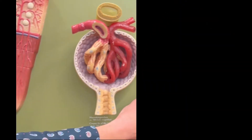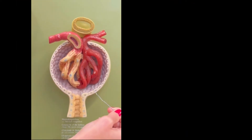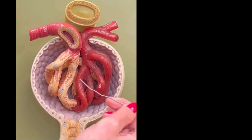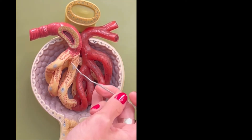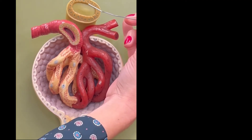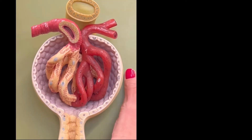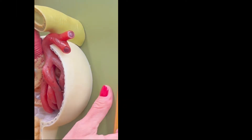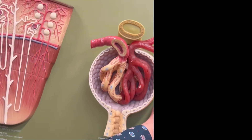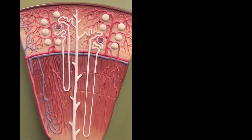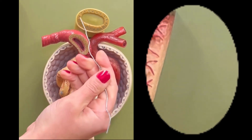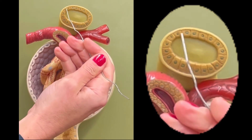Look at this zoomed-in version. Here is the renal corpuscle, made of the glomerular capsule — also called Bowman's capsule — and the glomerular capillaries, which are the capillaries you're seeing here. Then we see this tubule that's passing very close to the renal corpuscle, and if you look on the side, you can see that they're not really connected — they're very close but not connected. And this tubule right here is the distal convoluted tubule.